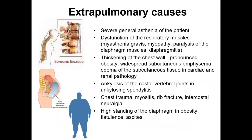Extra-pulmonary causes of weakening of vesicular breathing include severe general asthenia, or dysfunction of respiratory muscles during myasthenia gravis, myopathies, myositis, diaphragm pathologies, or diaphragmitis. Pathological weakening may also be connected with pronounced obesity, widespread subcutaneous emphysema, edema of subcutaneous tissue in cardiac and renal pathologies, ankylosis of costal-vertebral joints in spondyloarthritis or spondylitis, or chest traumas, myositis, and rib fractures — all of which may cause decreased audibility of vesicular sound.